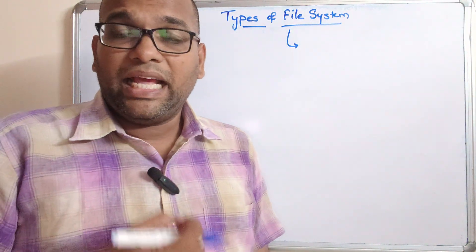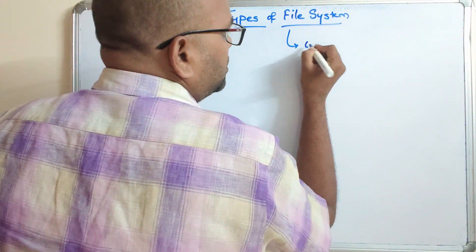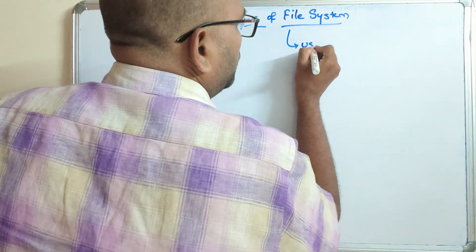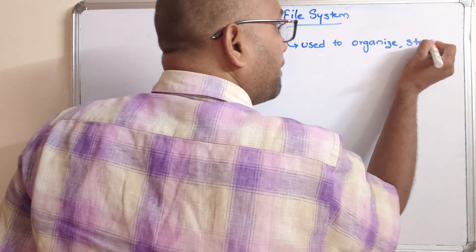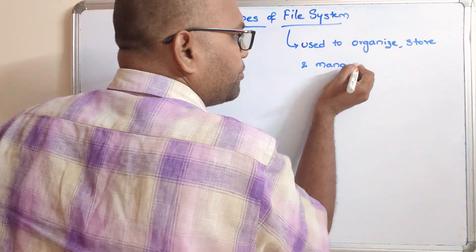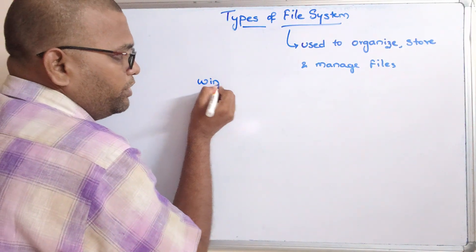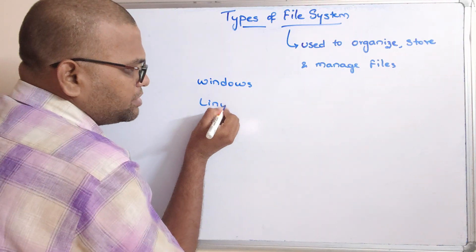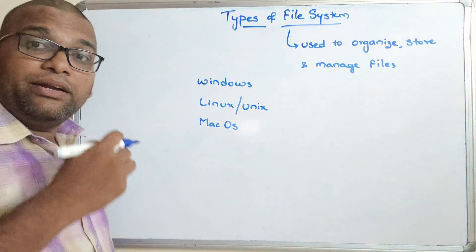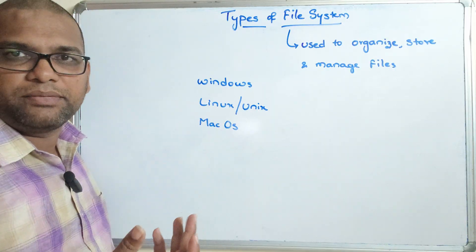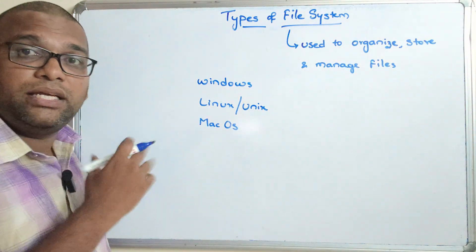The name itself indicates what a file system does — it helps the operating system to organize, store, and manage files. We know there are different types of operating systems: Windows, Linux, Unix, and Mac OS. Different operating systems support different file systems, and every operating system has its own file system to organize, store, and manage files.